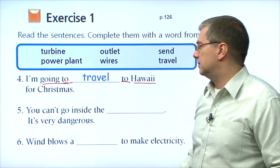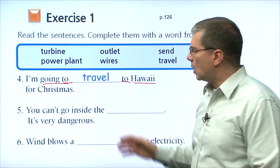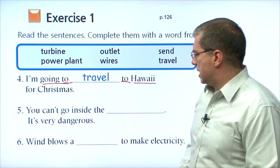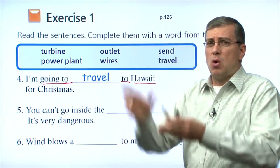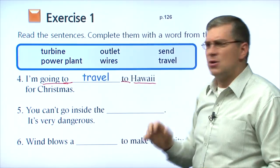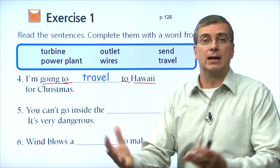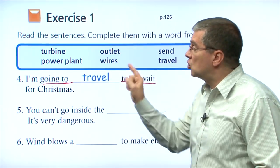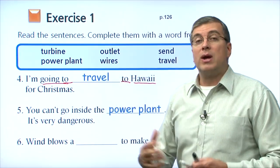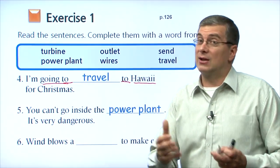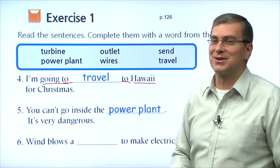Number five: you can't go inside the blank — it's very dangerous. Where would be very dangerous? A turbine? You can't really go inside a turbine — it's a big pole with a fan on top. But can you go inside a power plant? Remember, power plant is a building — you can go inside a building. But you should not go inside a power plant because it's very dangerous. We make electricity in a power plant, and electricity can be deadly. Don't go inside the power plant.